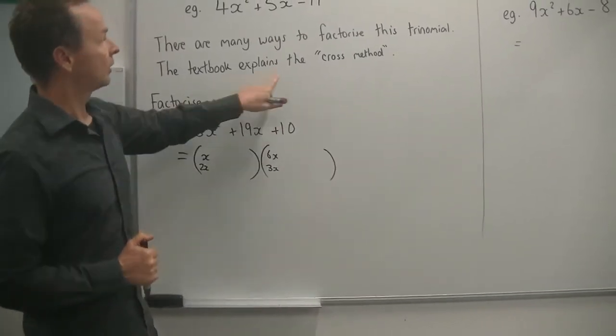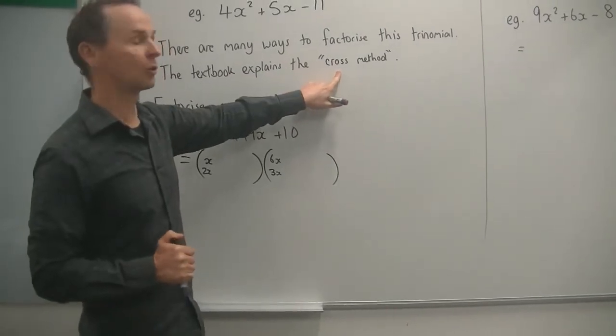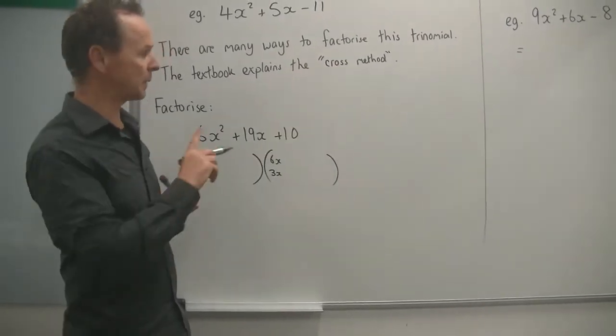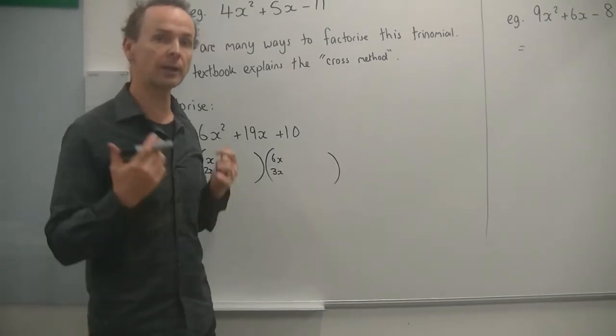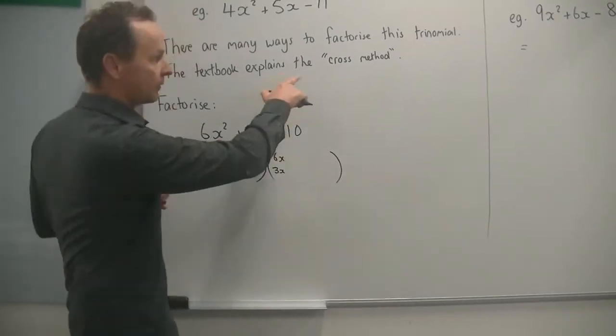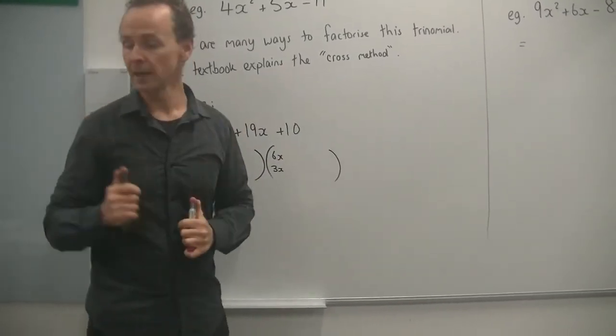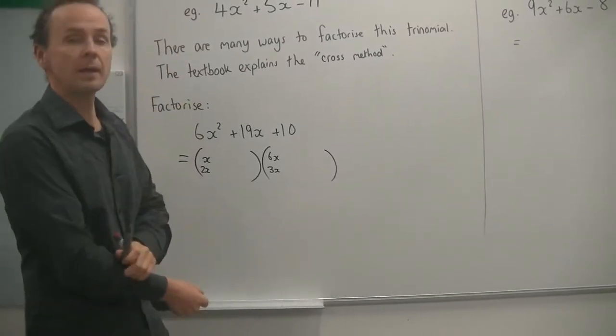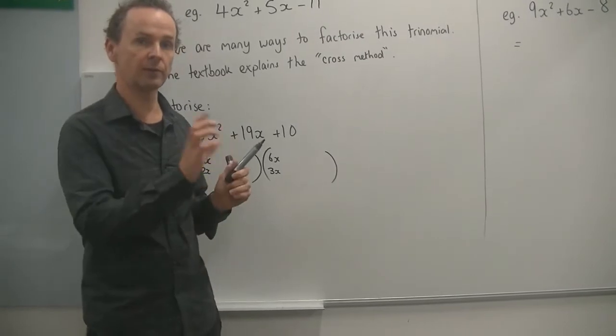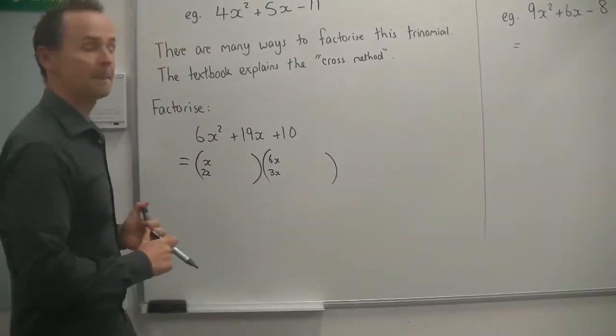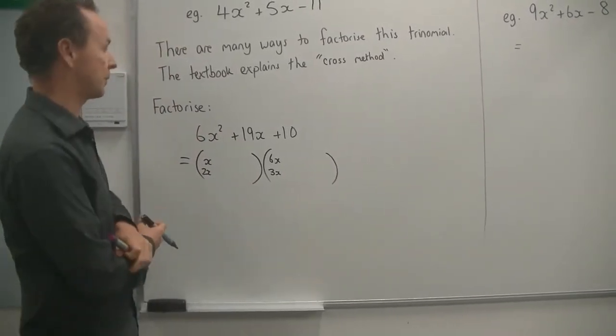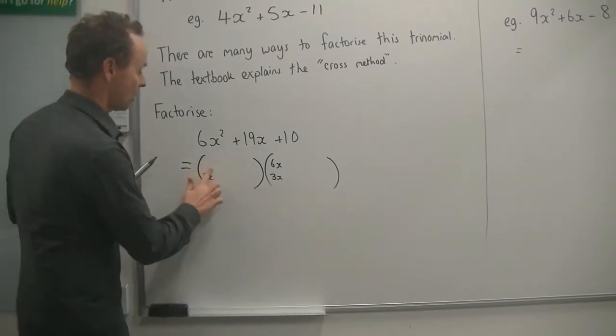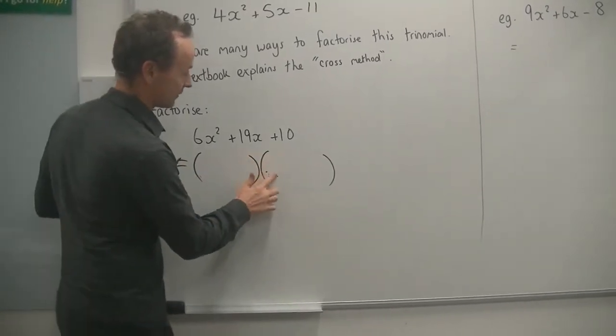So there are several ways to do this. The textbook talks about a method called a cross method. I'm going to explain that briefly in a second. Which is pretty much what I do but I like doing it mentally. But I kind of use a cross method in my brain. There is another method as well in the textbook where they use pairing. So it's sort of like you turn it into 4 terms and work it out. But you can look at that yourself. So I'll just explain the way that I do it normally.